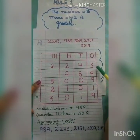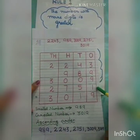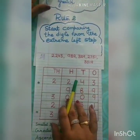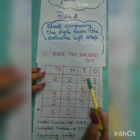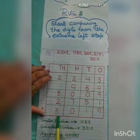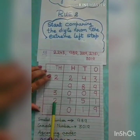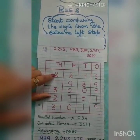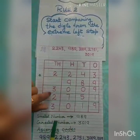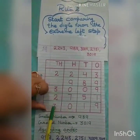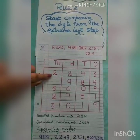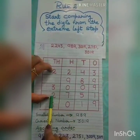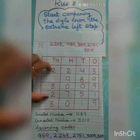When the number of digits are the same in these numbers, then we go for rule number 2. We have to compare the digits from the extreme left. When we compare the digits, we find that the numbers at their thousands place are same — 2 and 2 — while these numbers have 3 and 3. Since 2 is smaller than 3, we go with only the numbers starting with 2.